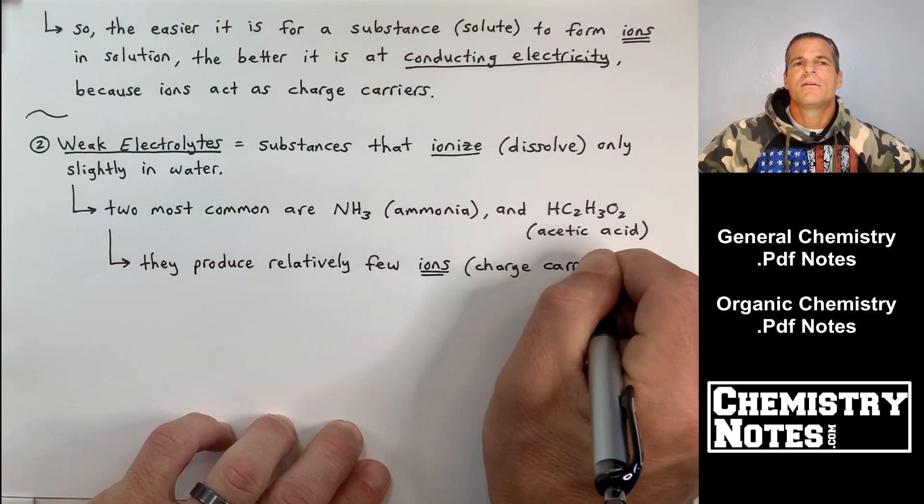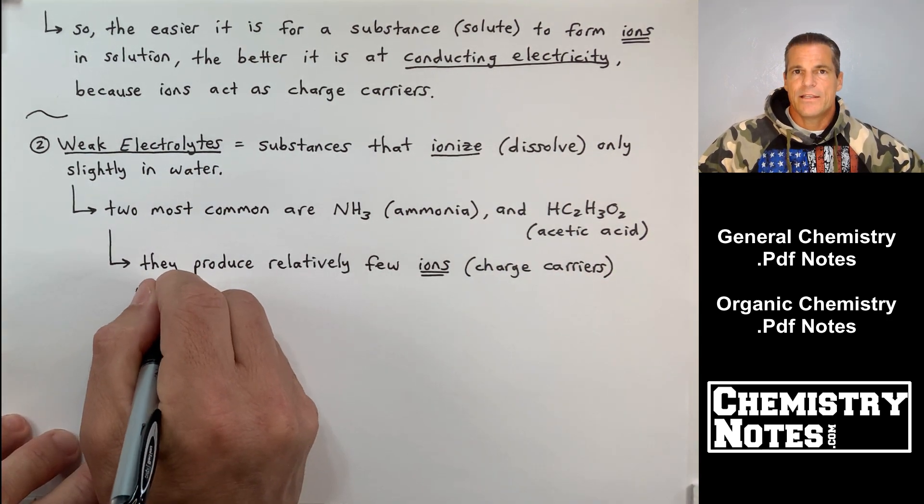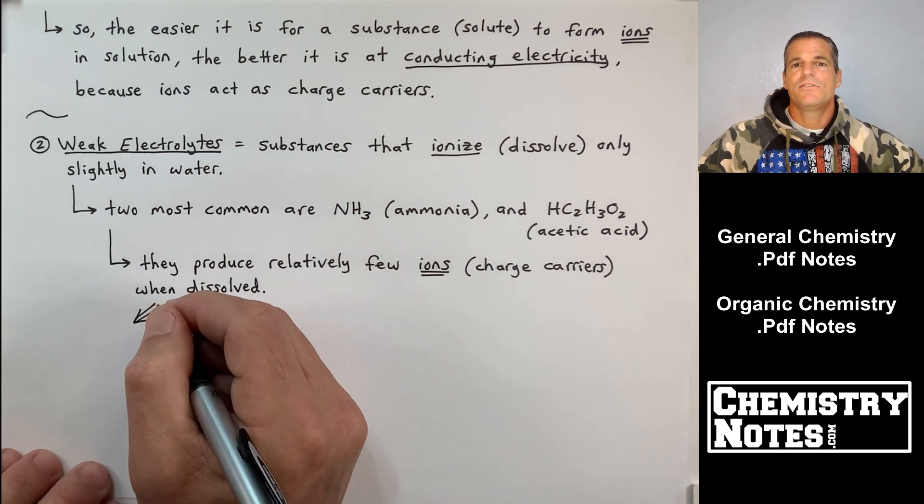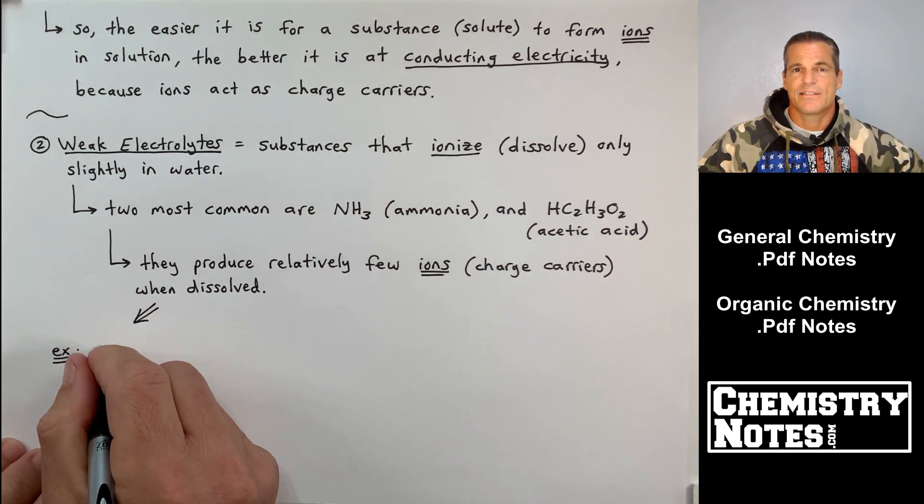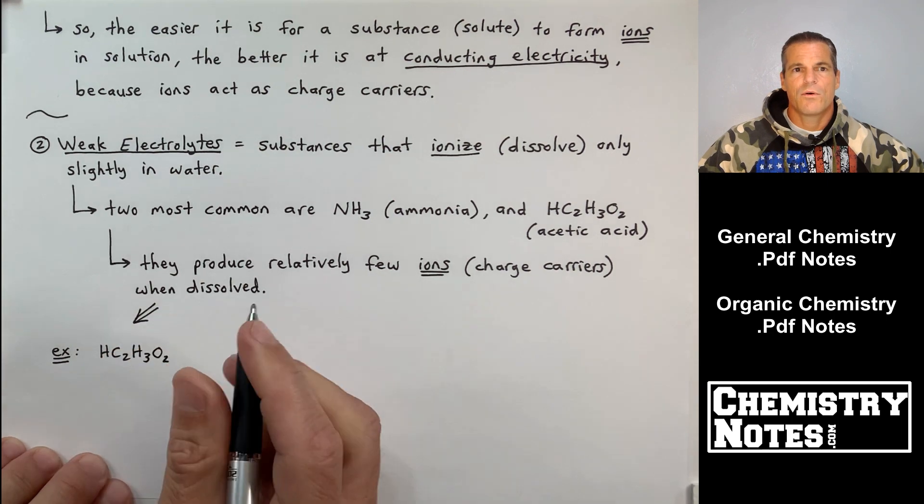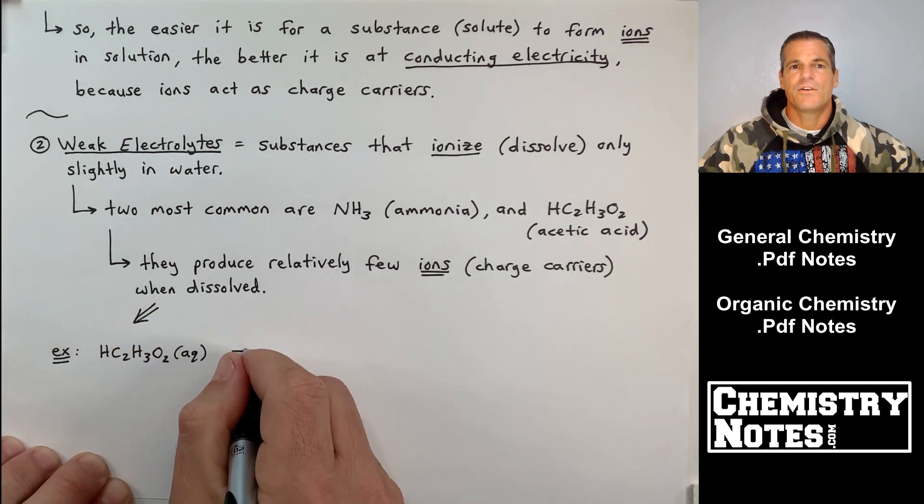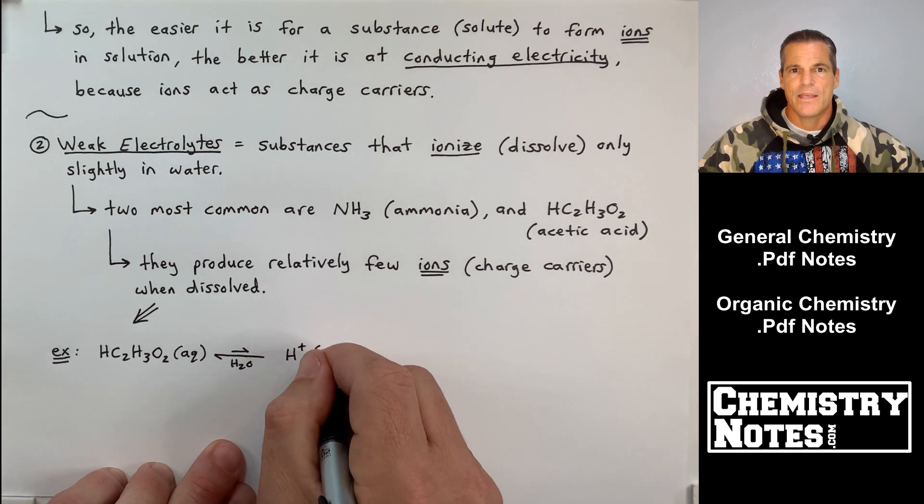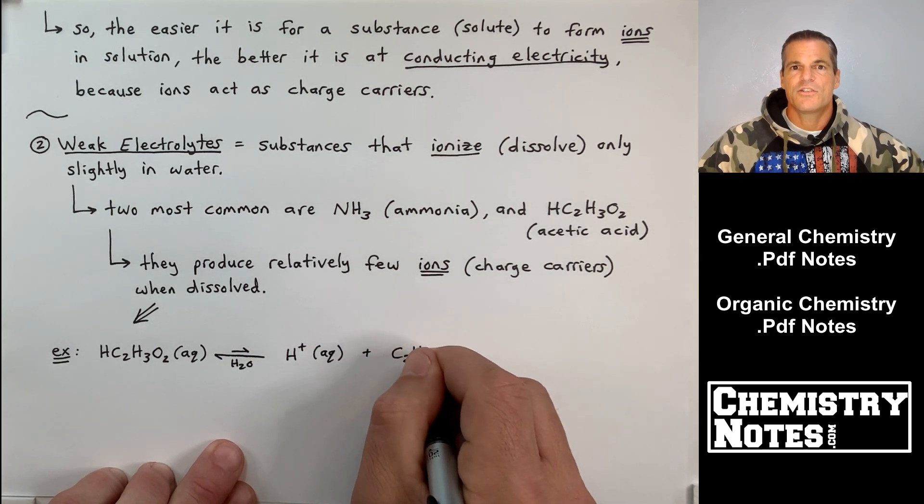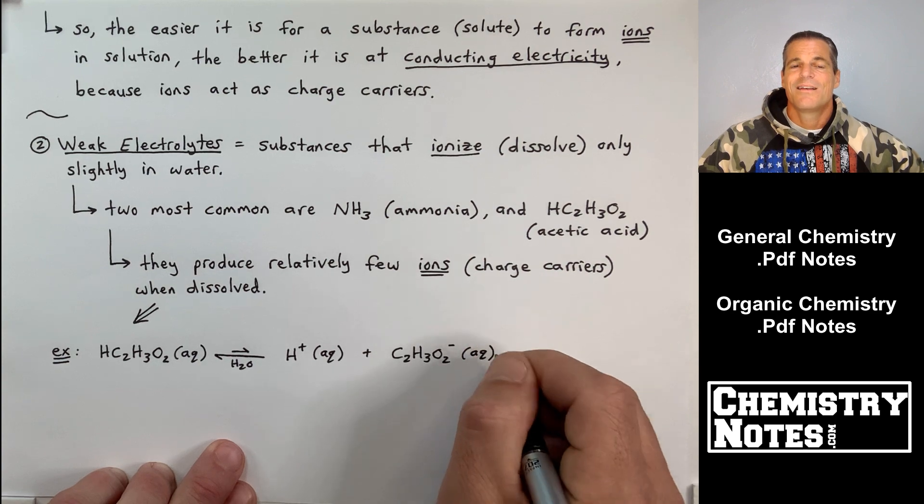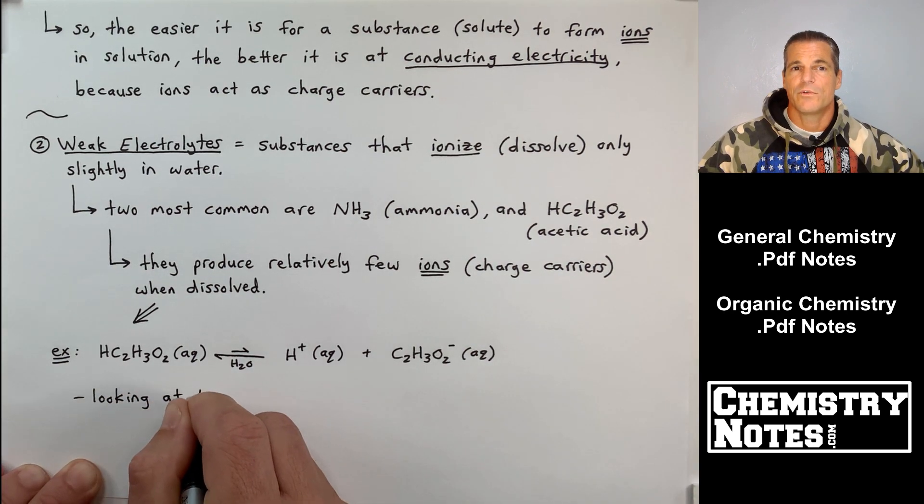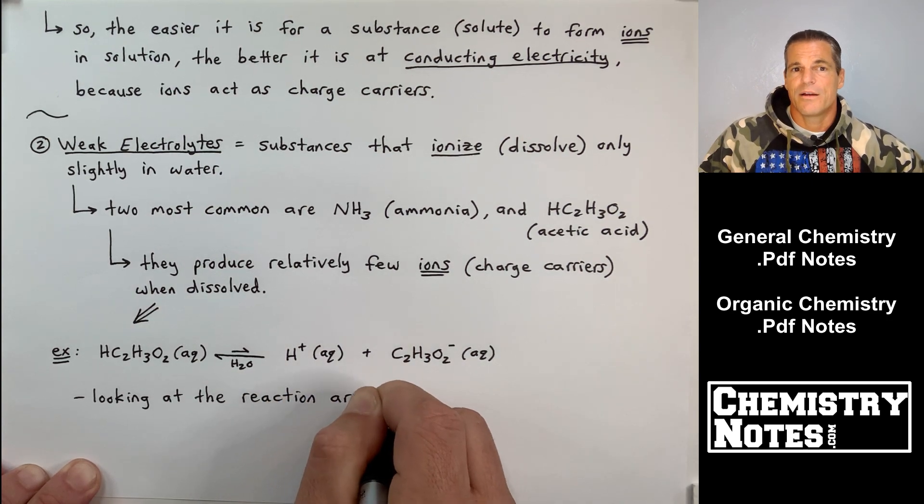Weak electrolytes, these are substances that ionize only slightly in water. So you are going to get some ions, some charge carriers. You are going to be able to complete that circuit and dimly light the light bulb. Now, the two most common weak electrolytes are NH3 ammonia and HC2H3O2, which is acetic acid.